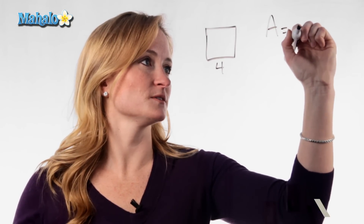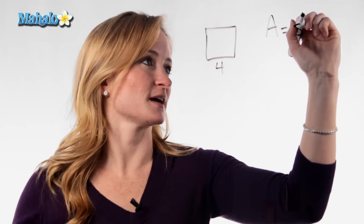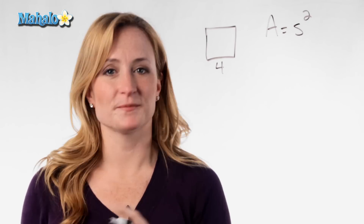Hi, this is Julie with Mahalo.com. We're going to discuss how to find the area of a square. The formula for area of a square is A equals side squared.